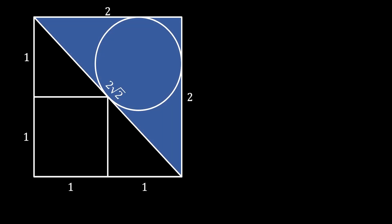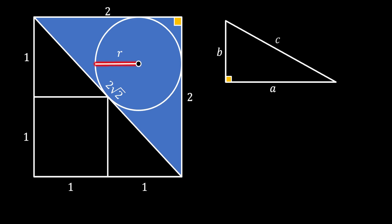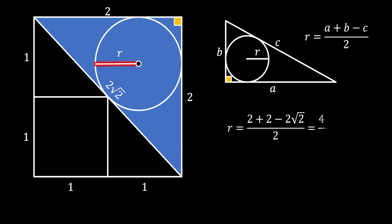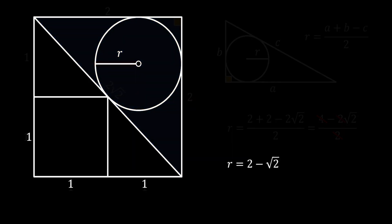Let's look at the shaded large isosceles right triangle, which represents half of the square — our circle is inscribed inside this triangle. Labeling the radius r, we use the property of a right angle triangle with an inscribed circle: the radius r equals (a + b − c) / 2, where a and b are the legs and c is the hypotenuse. Substituting our values and simplifying, we find the radius of the inscribed circle equals 2 minus square root of 2.